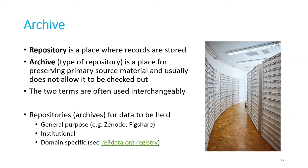Now we come to archiving data and repositories. What is a repository, what is an archive? A repository is generally just a place where records are stored, and an archive is a type of repository. The two terms are often used interchangeably. When we talk about research data repositories, we have three types.